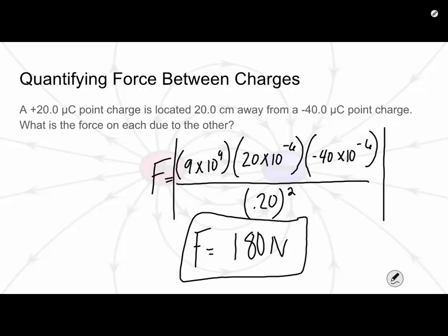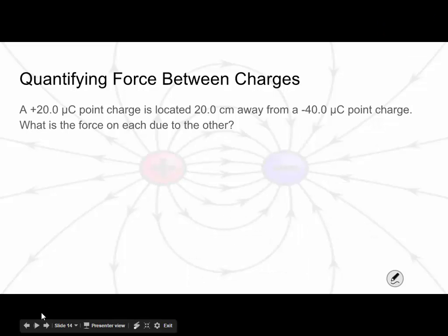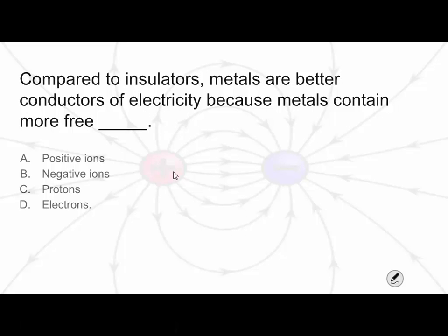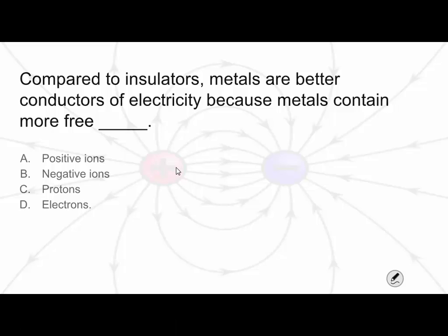If we think about this example, we have a plus 20 and a negative 40 — would this be attractive or repulsive? Opposites attract, so it would be an attractive force. Now let's review our understanding of charge. Compared to insulators, metals are better conductors of electricity because metals contain more free what — A, positive ions; B, negative ions; C, protons; or D, electrons? The answer is D, electrons. Metals are better conductors because they have more free electrons.